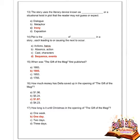Next question: plot is the what of what in a story — each leading to or causing the next to occur? Given options are actions, heroes, absence, cast and character, and sequence of events. Option D is correct — sequence of events. Plot is the sequence of events in a story, each leading to or causing the next to occur.